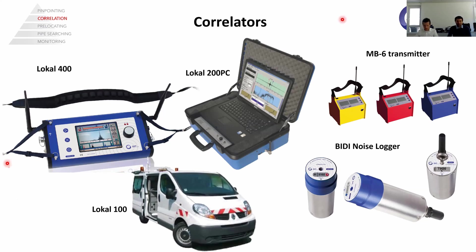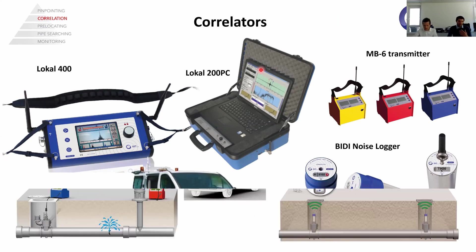The Local 100 also uses software on a PC to run the correlation program. Together with the correlator, you always need transmitting stations — we call them MB, measuring boxes. The newest development in FAS is the MB-6. We have them with us today and will show you the main functions so you also know about the newest products.